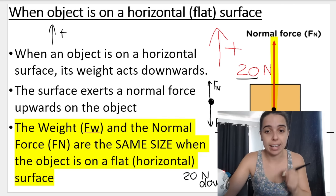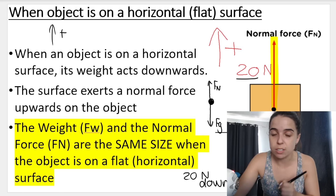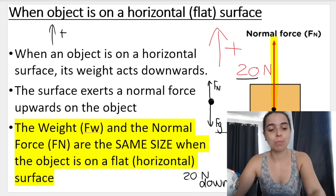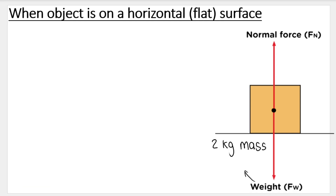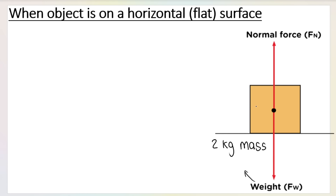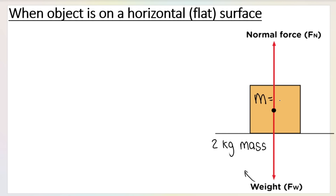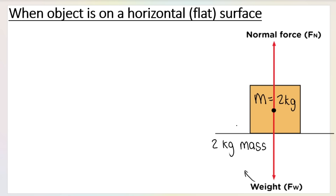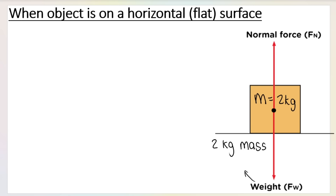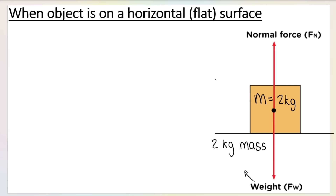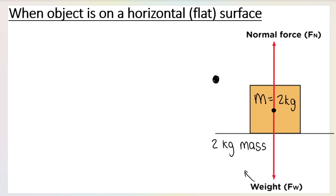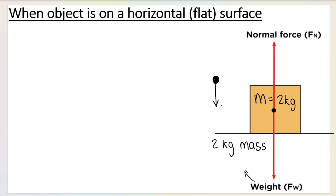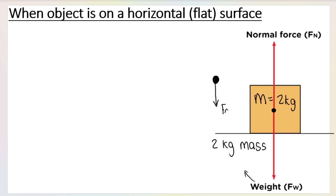Knowing how to write this is very important. You'll often use the shortcut that if the object is on a flat horizontal surface, the normal force equals the weight. So if the weight is 20 N down, then the normal force is 20 N up. But knowing why this is the case is very important for more complicated situations.